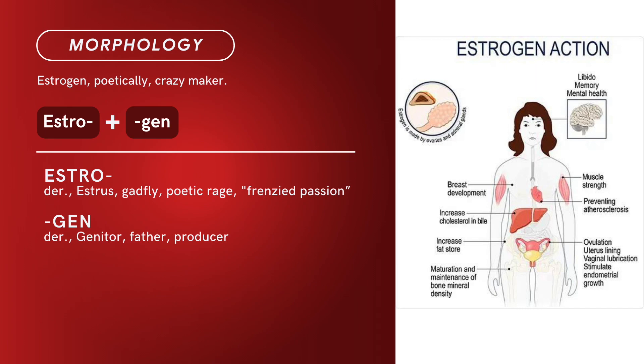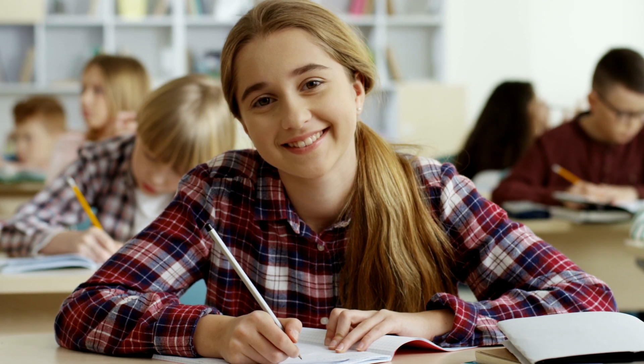Term morphology — estrogen, poetically meaning 'crazy maker.' Compound of estro plus gen. Estro is derived from estrus, meaning 'gadfly,' poetic rage, frenzied passion. Gen is derived from genitor, meaning 'father' or 'producer.' There you have it: compound term, estrogen. Awareness of the metaphors and imagery of the terms will help you learn faster and recall with ease. A good command of anatomy and physiology terms will inspire confidence in your professors, colleagues, and in your own abilities.